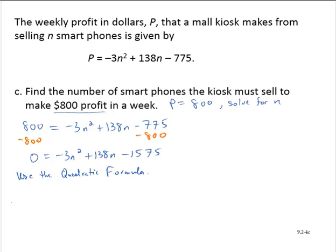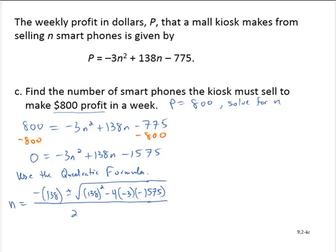So n would equal the opposite of 138 plus or minus the square root of 138 squared minus 4 by negative 3 by negative 1,575, and that's all divided by 2 times negative 3.